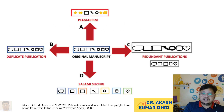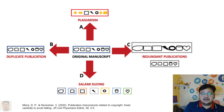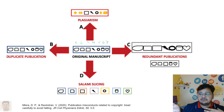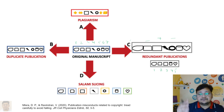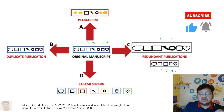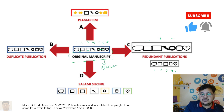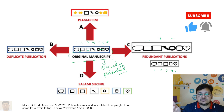Let's try to understand. We have an original article here with seven components — one, two, three, four, five, six, seven. When we say redundant publication, as you can see, five components out of the seven are being taken into that publication. This original article is already published, and now we're talking about redundant publication.